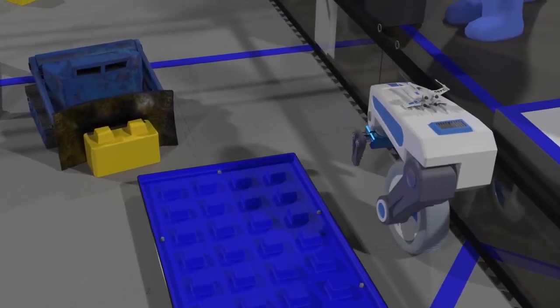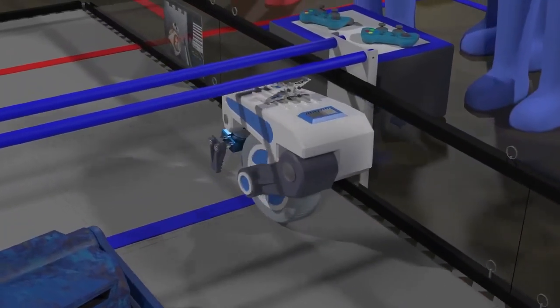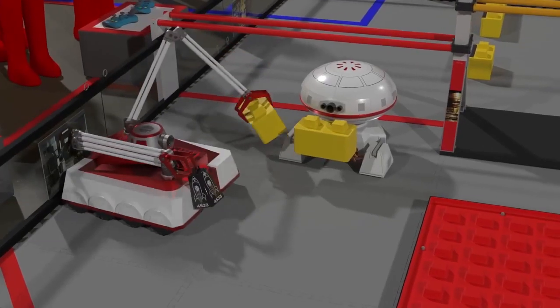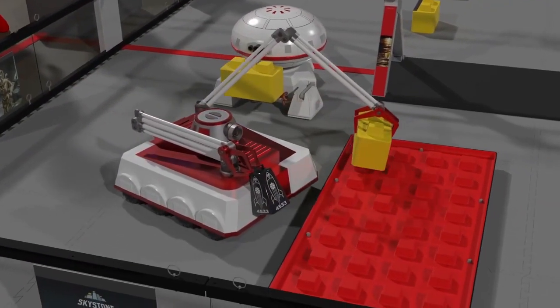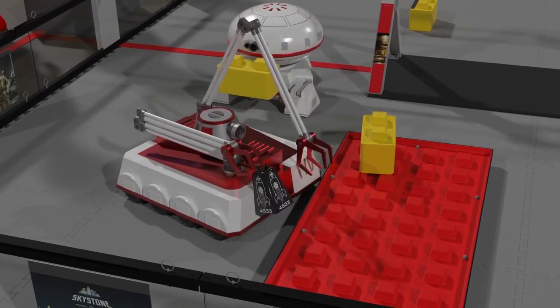If a robot can park over the midfield tape, it will earn 5 points. And finally, each stone placed in the foundation earns 2 points.